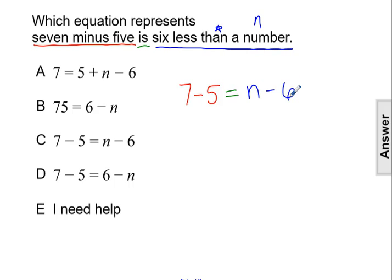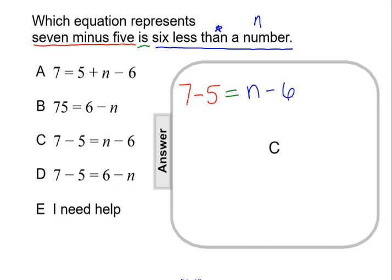So 7 minus 5 is 6 less than a number is 7 minus 5 equal to n minus 6, that equation, which is answer choice C.